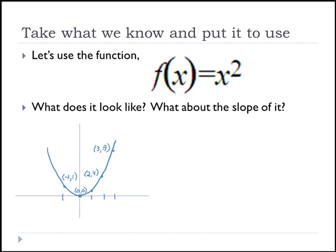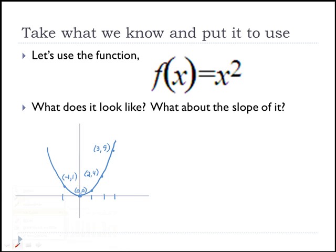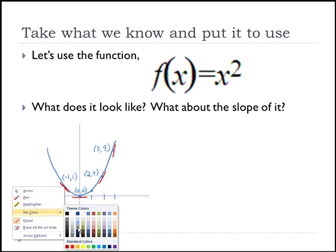Now let's talk about the slope of the function. As we look at these different points, we have different slopes. Remember, slope is the steepness of the curve — it's the rate of change. At negative 1 we have a negative slope, at 0 we have a horizontal slope, and at 2 and 3 we have positive slopes that get steeper as x gets larger. Now what is the actual numerical value of the slope?